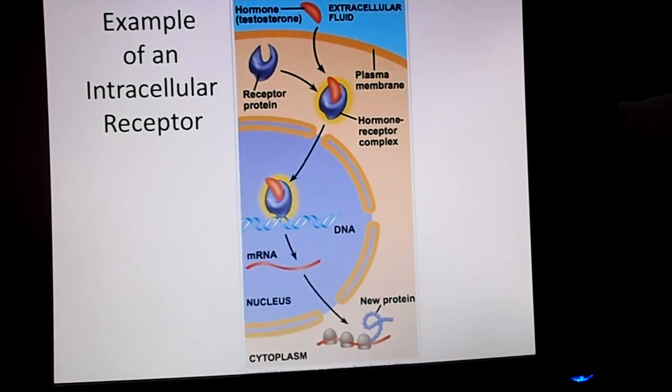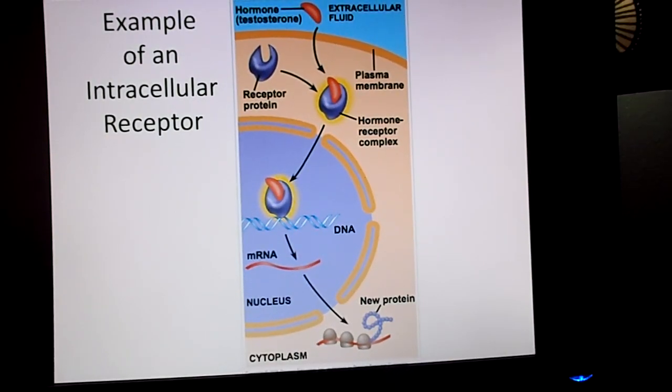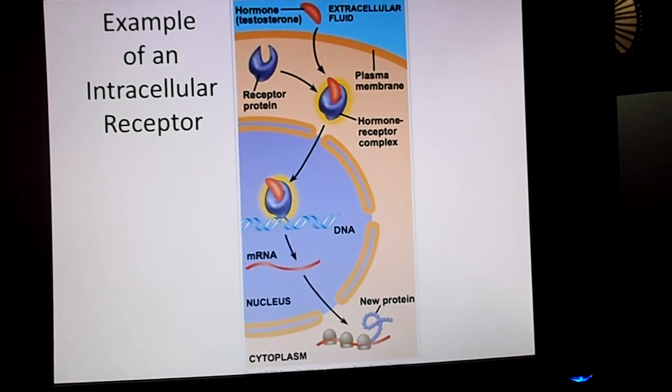Therefore, it decides which mRNA is made, which goes to ribosome to make proteins. In this case, this would be guiding male secondary sex characteristics often involved in puberty. So this is a perfect example of an intracellular receptor.